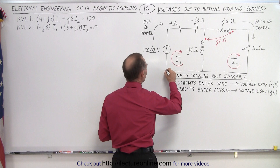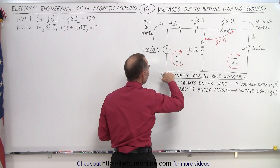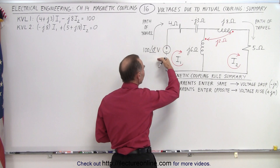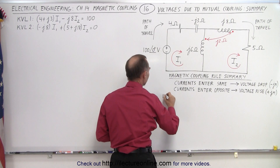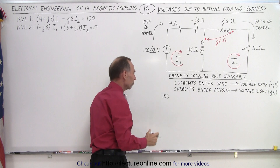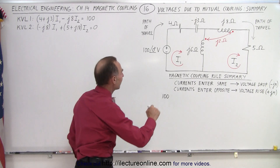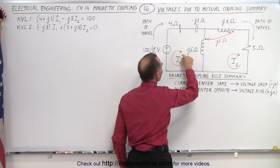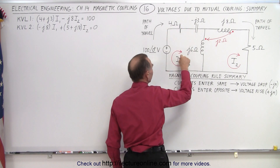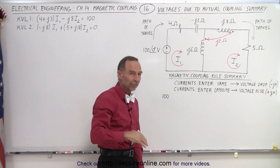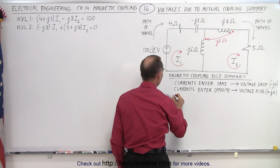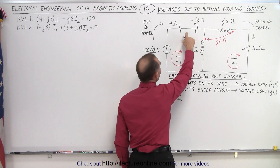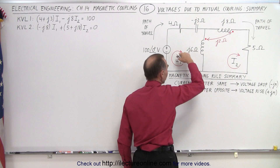Starting at this point right here — this is the starting point — we'll go around the loop and come back. We go across the battery from the negative to the positive end, so that's a voltage rise: 100 volts with a phase angle of zero, so we write 100. Then we travel along this path across the resistor in the same direction as the current; traveling with the current across the resistor is a voltage drop, so that's minus 4 times the current.